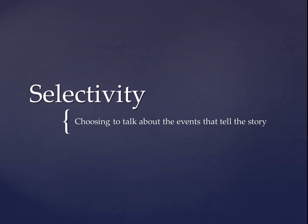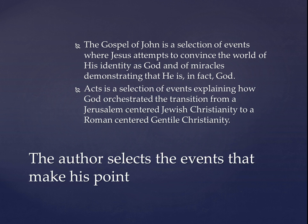Let's talk about selectivity first. The author chooses the events to talk about — the events that really tell the story he wants to address. Let me give you two examples. First, the Gospel of John. If you look at the content of the Gospel of John — the miracles, conversations, and teachings — they're pretty unique to John. Matthew, Mark, and Luke don't really talk about the same things that John does. John chooses to discuss completely different material.